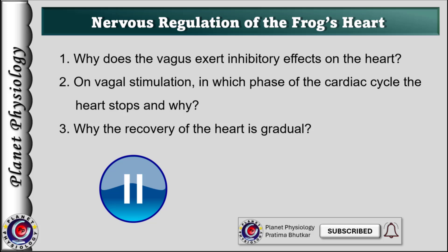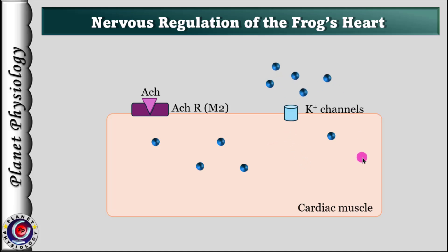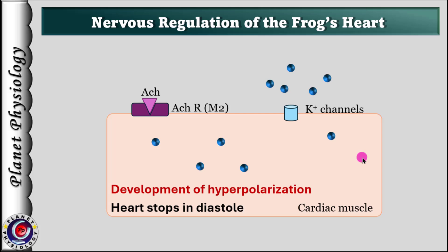The inhibitory effect of the vagus is because of release of acetylcholine. Acetylcholine binds with muscarinic receptors — specifically M2 receptors — on the cardiac muscle. As a result, potassium channels open and there is increased membrane permeability for potassium ions, leading to potassium efflux. As there is loss of positive charges from the muscle, there is development of hyperpolarization and the heart stops in diastole.